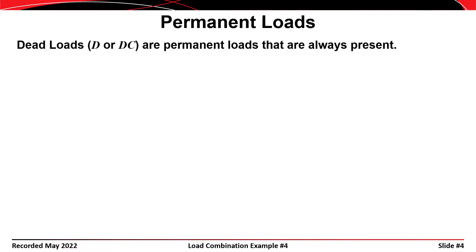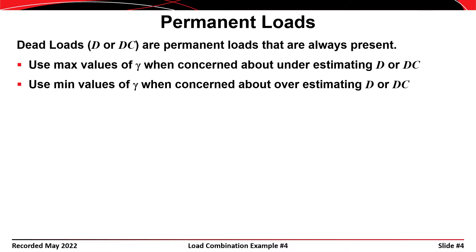Dead loads are permanent loads that are always present on the structure. Examples include the variable D in ASCE7 load combinations or DC in AASHTO load combinations. You use the maximum values of gamma for dead loads when concerned about underestimating them, and the minimum values of gamma when concerned about overestimating them.